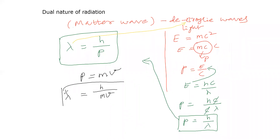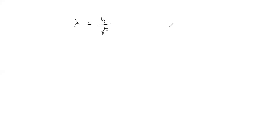The de Broglie wavelength formula is λ = h/p. If there is a moving particle, there is kinetic energy. The wavelength with respect to kinetic energy: if there is kinetic energy, the wavelength is equal to h divided by momentum, that is λ = h/p. In terms of kinetic energy, we know kinetic energy equals ½mv².